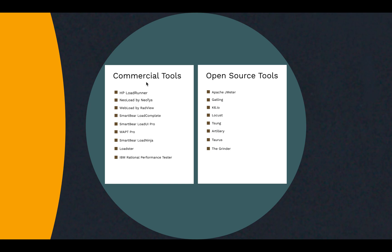There are both commercial and open source performance testing tools. Commercial tools include popular ones like LoadRunner, NeoLoad, WebLoad, and LoadComplete. Open source tools have a lot of variety as well — Apache JMeter is one of the most popular ones, with others including Gatling, k6, Locust, and Tsung.